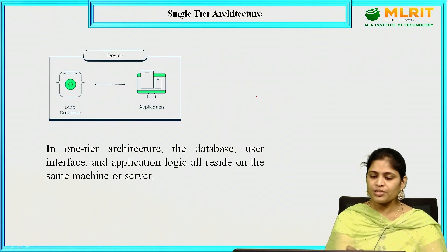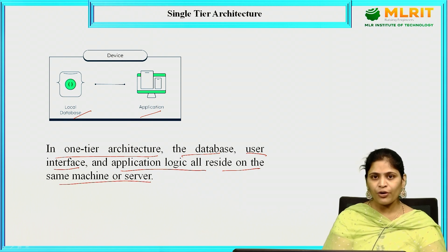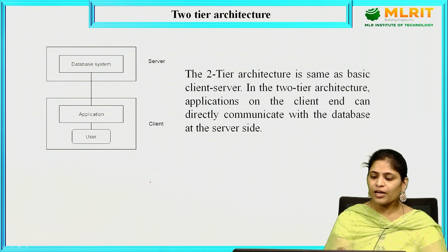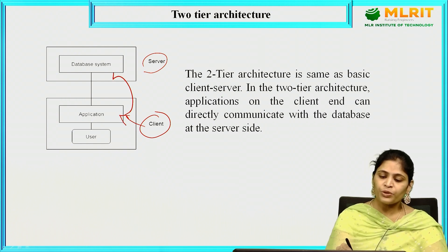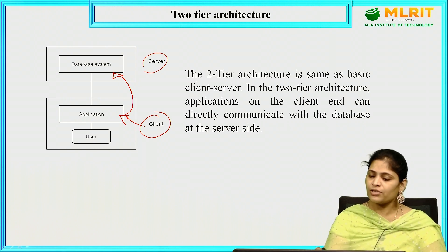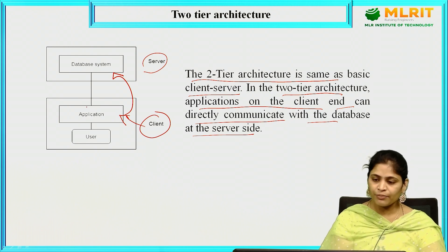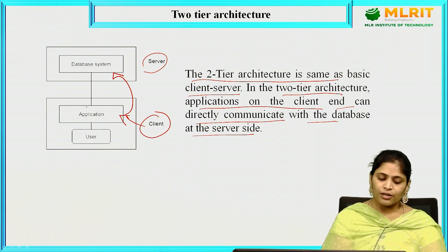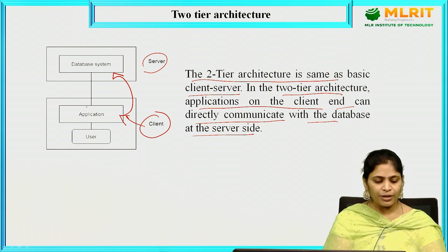In one tier architecture, the local database and application will be in a single device. The database, user interface, and application logic all reside on the same machine or server. In two tier architecture, we have two levels — the client and the server. The client-side application program will interact with the database directly. Two tier architecture is the same as basic client-server, where applications on the client end can directly communicate with the database at the server side. However, security is somewhat less compared to three tier, because the user-side application communicates directly with the database.